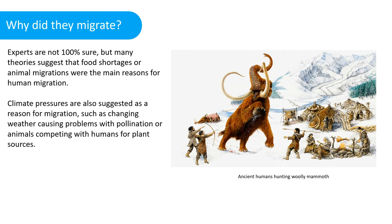So why did they migrate? Experts are not 100% sure, but many theories suggest that food shortages or animal migrations were the main reasons for human migration. Climate pressures are also suggested as a reason, such as changing weather causing problems with pollination or animals competing with humans for plant sources. Here is an illustration of ancient humans hunting woolly mammoths.